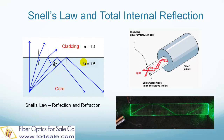The core has a higher refractive index, n equals 1.5. The cladding has a lower refractive index, n equals 1.4. When light incidents at the interface between the core and cladding at different angles, some power is reflected back, and some power enters into the cladding, which is refracted.